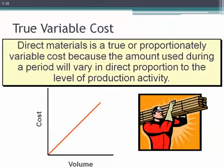In terms of manufacturing companies, direct materials is a true variable cost by definition — it's a cost that varies directly and that we can easily trace to units of production. So as our activity level increases, as we make one more unit of our product, we also need one more unit of raw materials. Thus, as our level of output increases, our total variable cost will also increase in direct proportion to that level of output or activity.